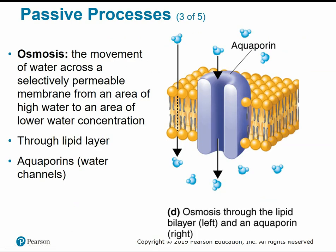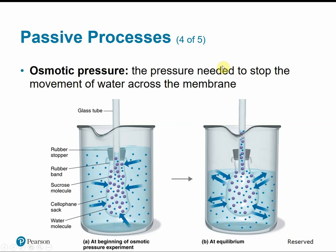Osmosis is the diffusion of water across the selectively permeable membrane — still going from high to low concentration, but we're looking at water molecules rather than solutes. Some water molecules can pass through simple diffusion, though not as quickly. They have special channels called aquaporins or water pores that span the entire membrane, allowing them to pass in and out easily. Osmotic pressure is the pressure needed to stop the movement of water across the membrane; once equilibrium is reached, there's no more net change or movement.